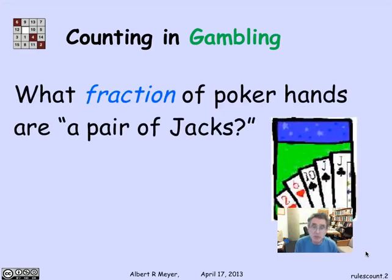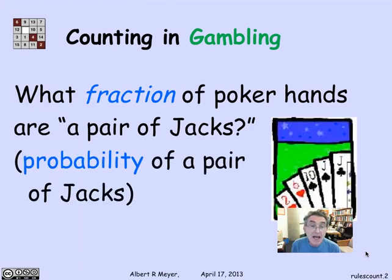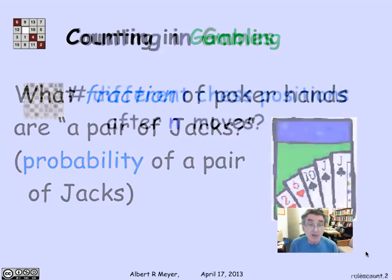So a typical kind of question would be, if you know how poker works, there are various classifications of five-card hands in poker, and you might ask, what fraction of all possible five-card poker hands translate into being a pair of jacks? And basically, this fraction of total poker hands which fit into the category of a pair of jacks is the probability of a pair of jacks. So counting and gambling is one fundamental place where it really comes up, and historically that's where a lot of combinatorics begins.